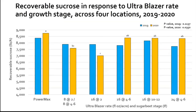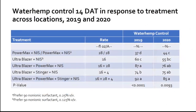Looking at recoverable sucrose data from 2019 and 2020, UltraBlazer can result in yield and quality differences. We did not see statistical differences when we applied UltraBlazer at the six-leaf stage or greater compared to the glyphosate check, but we did see a numerical difference. This is also UltraBlazer alone — when we add a tank mix partner, especially glyphosate, we may see even more yield loss. But we also see more efficacy and activity from UltraBlazer when we tank mix, and adding glyphosate specifically provided our best control.